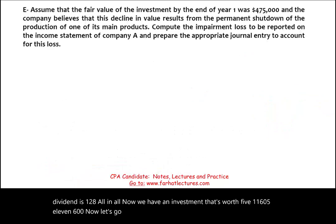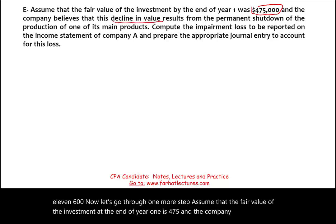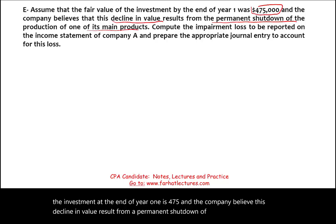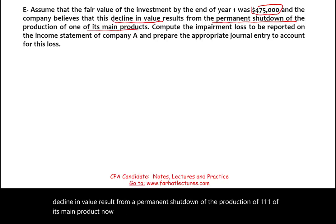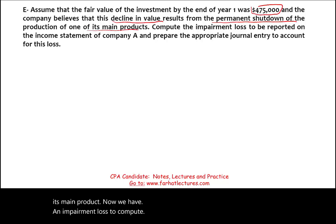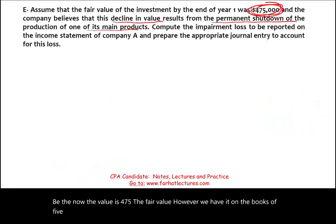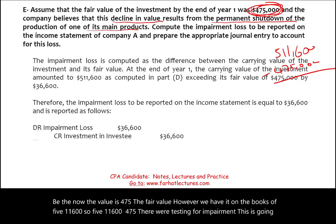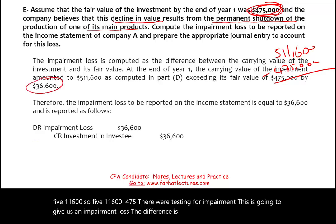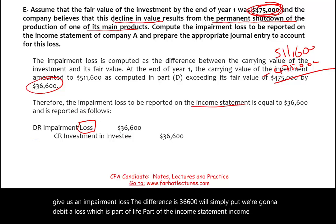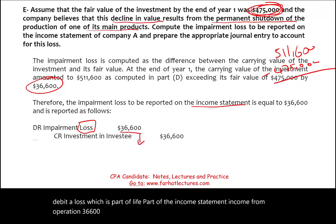Now assume the fair value of the investment at the end of year one is $475,000, and the company believes this decline results from a permanent shutdown of one of its main products. We have a book value of $511,600 versus a fair value of $475,000. The impairment loss is $511,600 − $475,000 = $36,600. The journal entry: debit Impairment Loss (income from operations) $36,600, credit Investment in Investee $36,600.